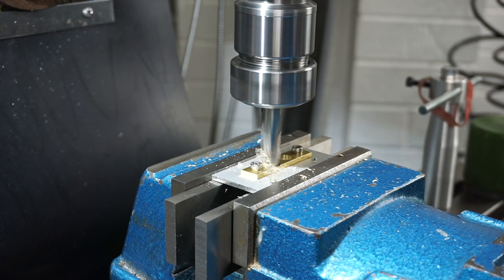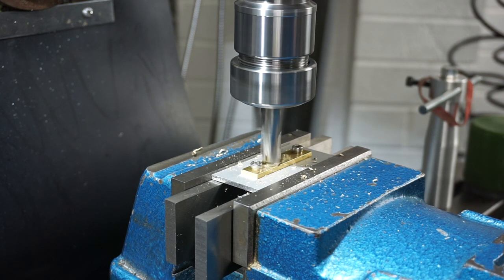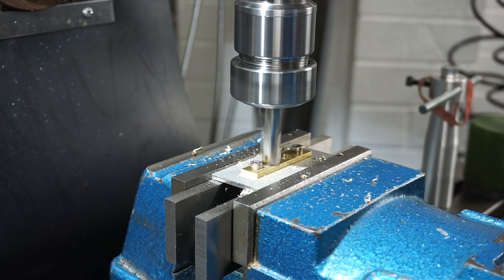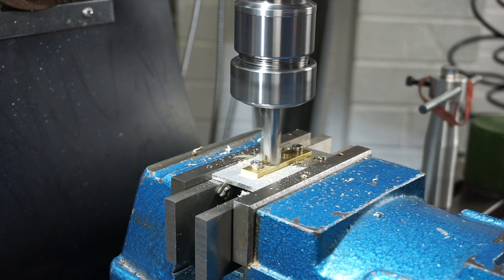Now I'm just plunge cutting with that half inch slot drill and enlarging that hole to half an inch. But I'm not going all the way down, I'm going half the thickness of the brass plate.